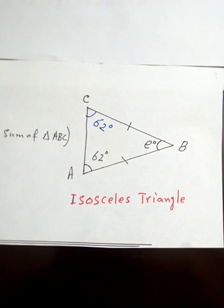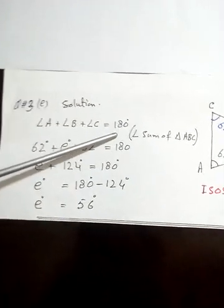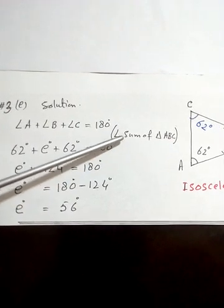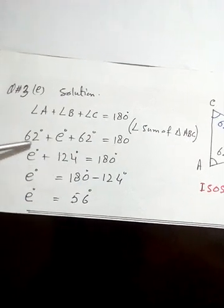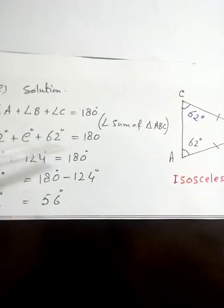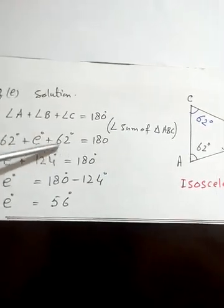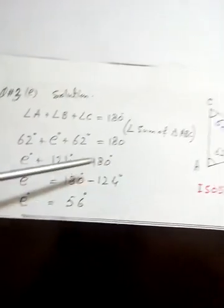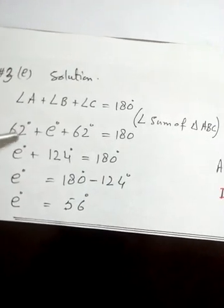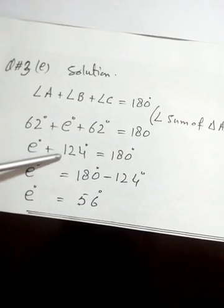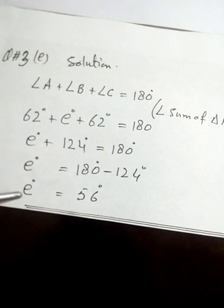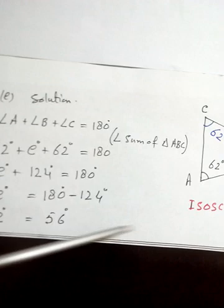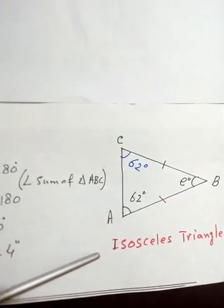This point is very important. Angle A plus angle B plus angle C equals 180 degrees, by the angle sum property of triangle ABC. Angle A is 62, angle B is e, and angle C is also 62 because these are the base angles of an isosceles triangle. The sum of 62 and 62 is 124. Shifting 124 to the other side: e equals 180 minus 124, so e equals 56 degrees. This is the value of angle E of an isosceles triangle.